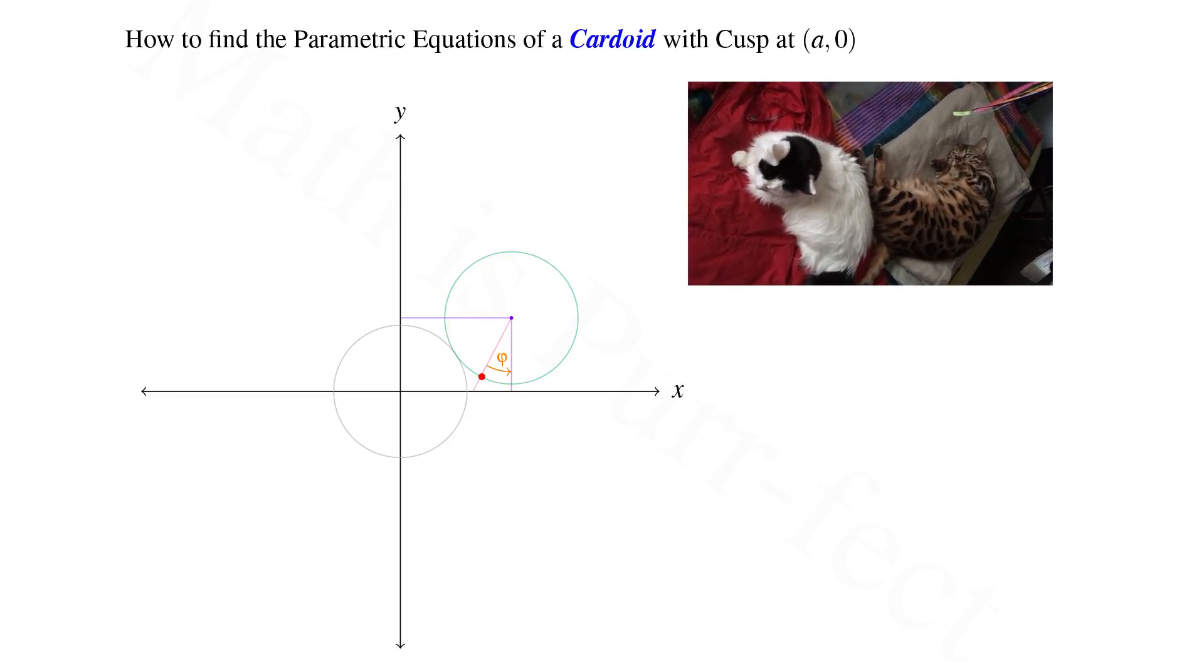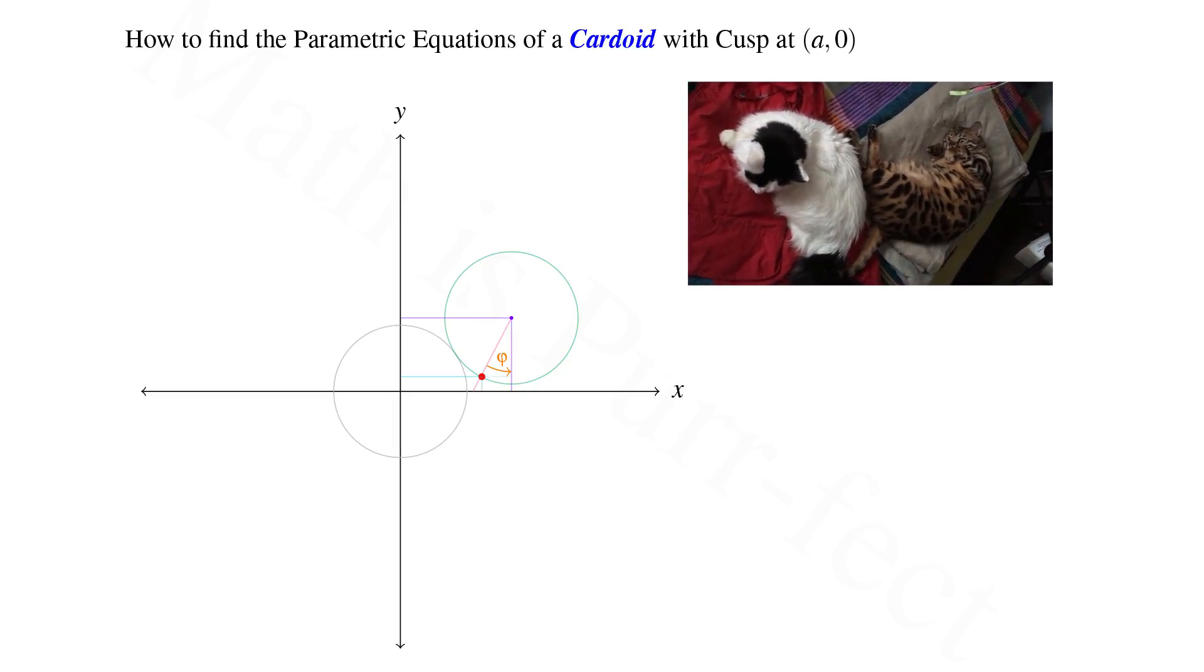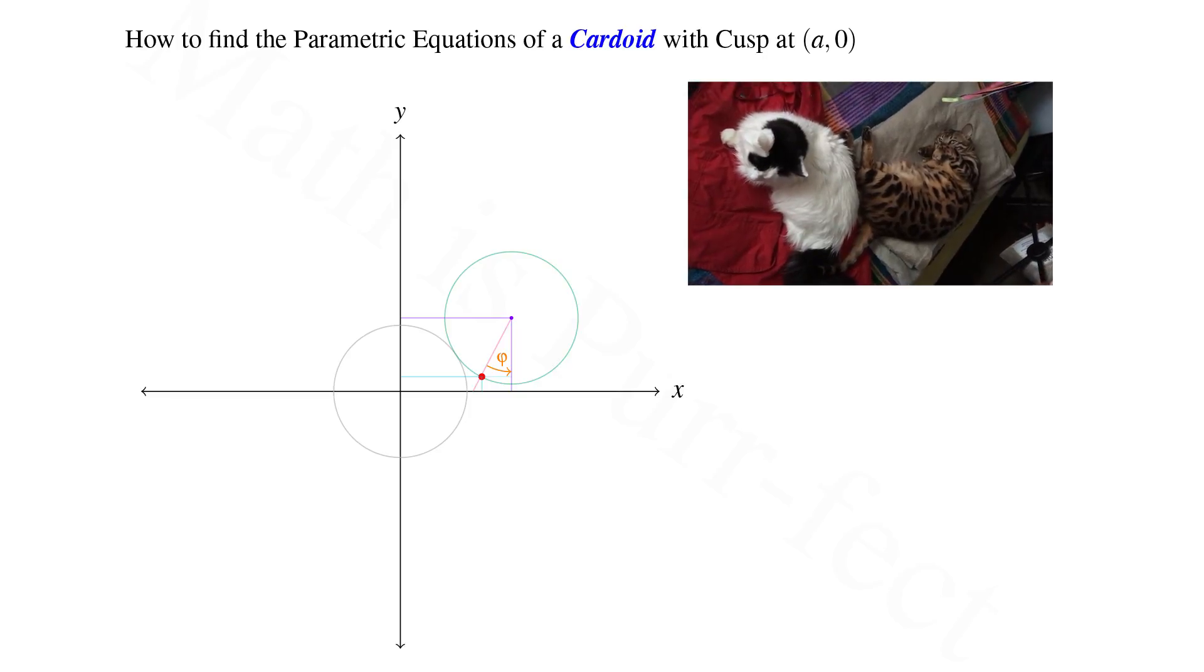But our goal is to find the x and y coordinates of the point on the cardioid. So let's consider the perpendiculars to both axes from that point.